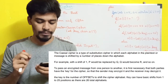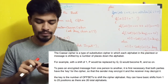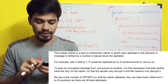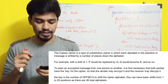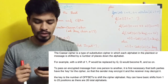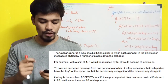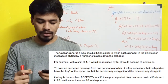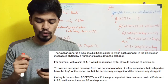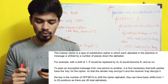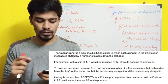Caesar Cipher is a type of substitution cipher in which each alphabet in the plain text or message is shifted by a number of places down the alphabet. For example, with a shift of 1, P would be replaced by Q, Q would become R, and so on.